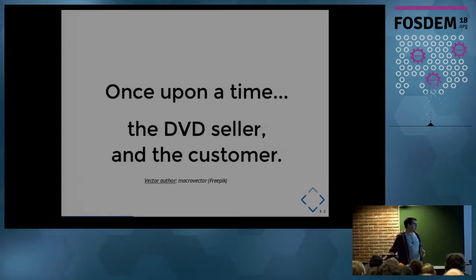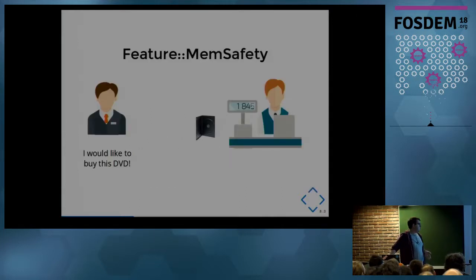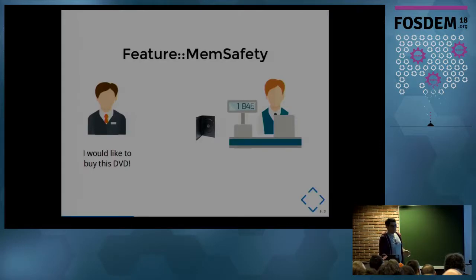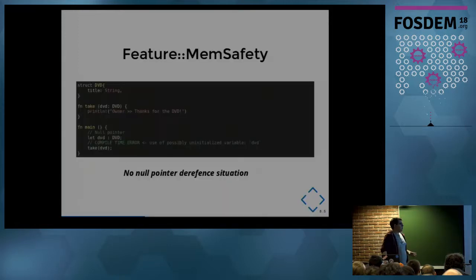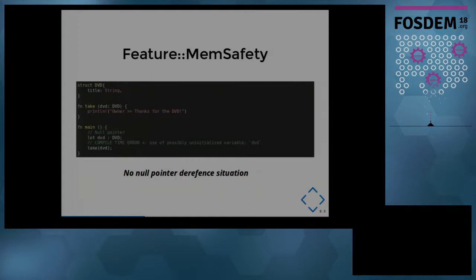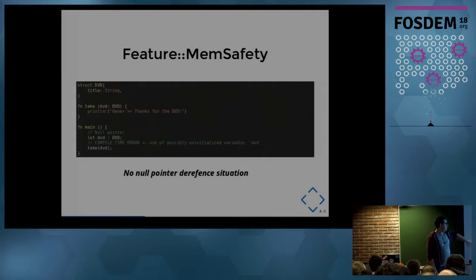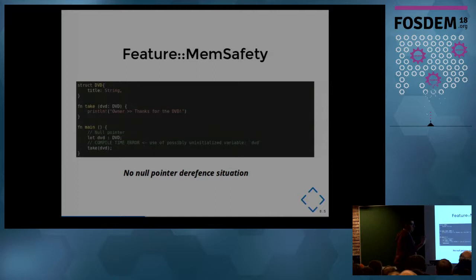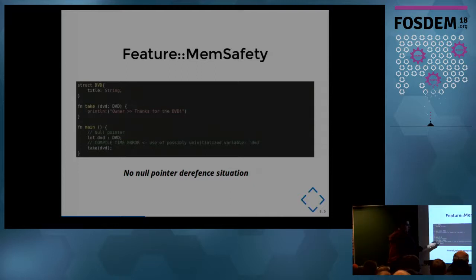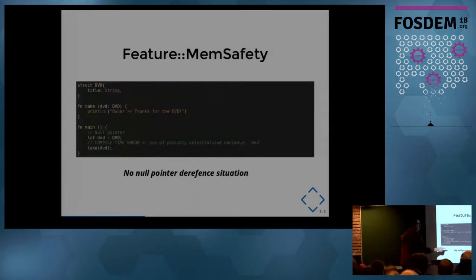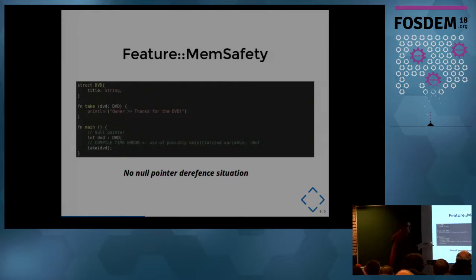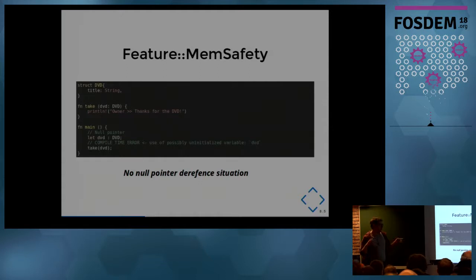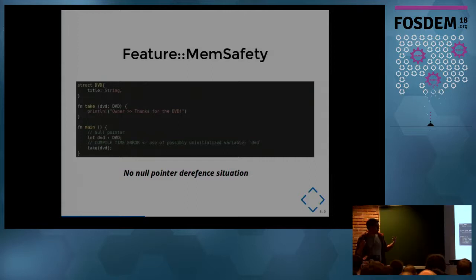Just to explain those concepts, I will introduce a short story: the DVD seller and the customer. Imagine you are a customer and you want to buy a DVD. But if the box is empty, you cannot buy it — the DVD seller cannot sell you that DVD. It's the same case for Rust: for memory safety, we have no null pointer dereference situation. Imagine we have a struct DVD with a title and a function 'take' that takes the struct directly. In the main function we allocate memory for the DVD. But here there is a compile-time error — not at runtime. 'Use of possibly uninitialized variable DVD.' The compiler tells you that you cannot run this program because there is a null pointer dereference situation.